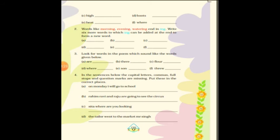Look for words in the poem that sound like the words given below — these are homophones, having the same pronunciation but different meanings. For example: 'r' sounds like 'our' (h-o-u-r), 'there' sounds like 'their,' 'flower' sounds like 'flour,' 'where' sounds like 'wear,' 'sun' sounds like 'son,' 'through' sounds like 'threw.' In the sentences below, capital letters, commas, full stops, and question marks are missing — put them in the correct places. Always remember: the beginning of a sentence should start with a capital letter, then find where commas, full stops, and question marks are needed.